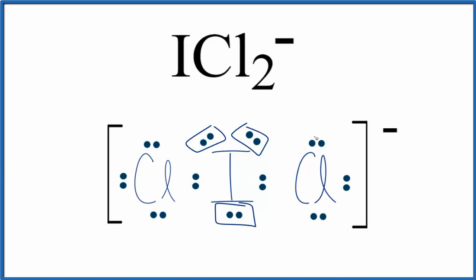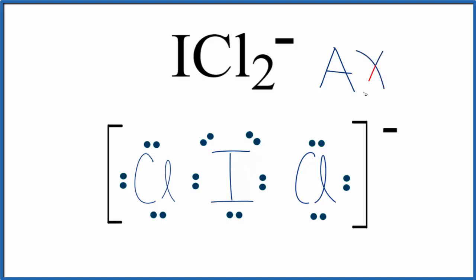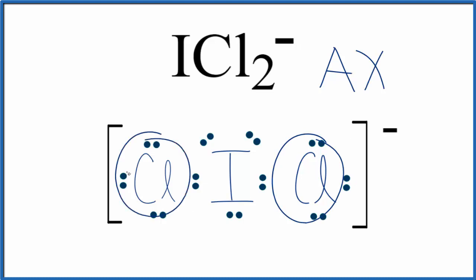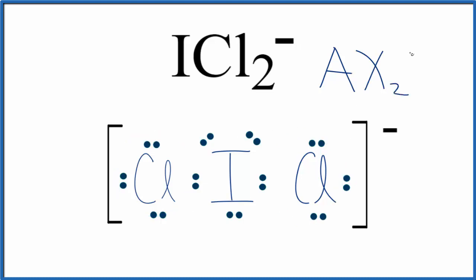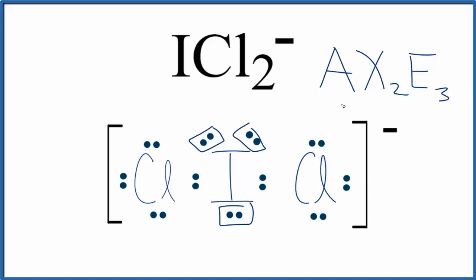So if we use the AXE notation: A is the central atom — that's the iodine — we figure out molecular geometry for the central atom. X is the number of atoms; we said we have 2 chlorine atoms. And then E is the number of lone pairs; we have 3. And you either memorize, or you're allowed to look up, that this is a linear molecular geometry.